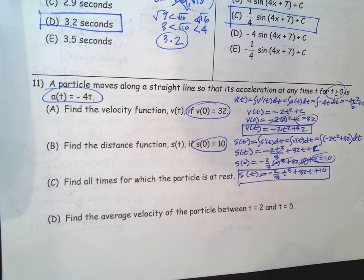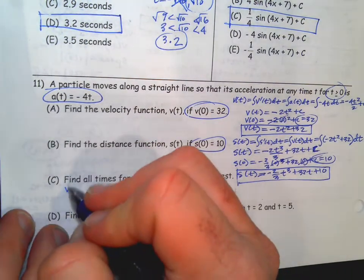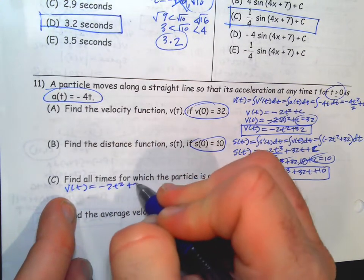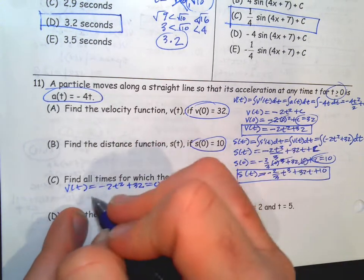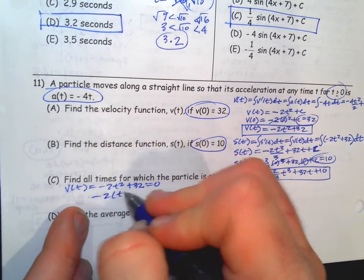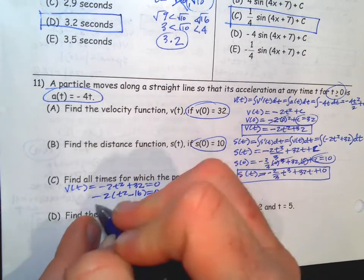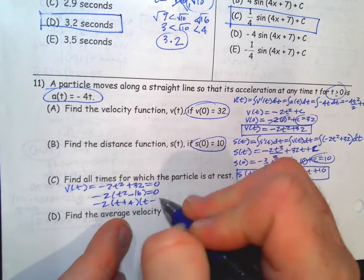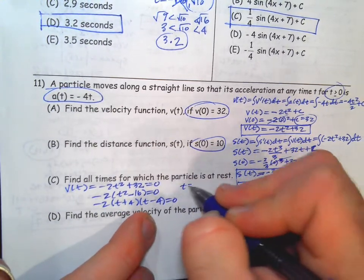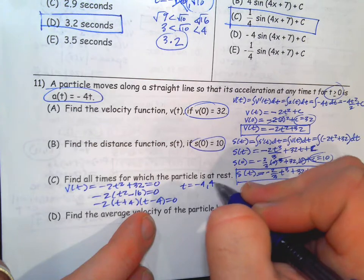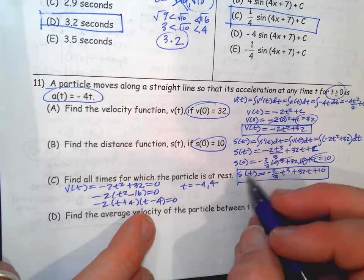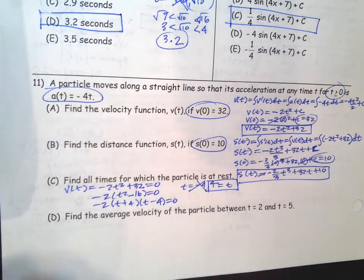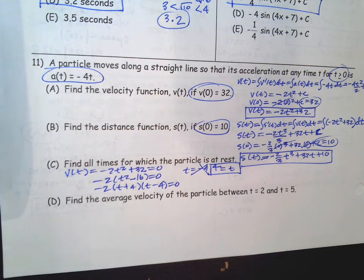Find all times when the particles are at rest. That would be when velocity equals 0. So we're going to take our velocity equation, negative 2t squared plus 32. So that is equal to 0. Factor out the negative 2. Difference of squares. So we get t equals negative 4 and 4. And we're not going to include negative time. So this is a little different than time to impact. But we're still not going to include negative time.